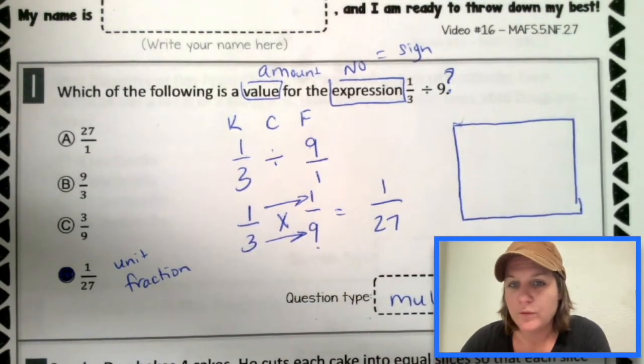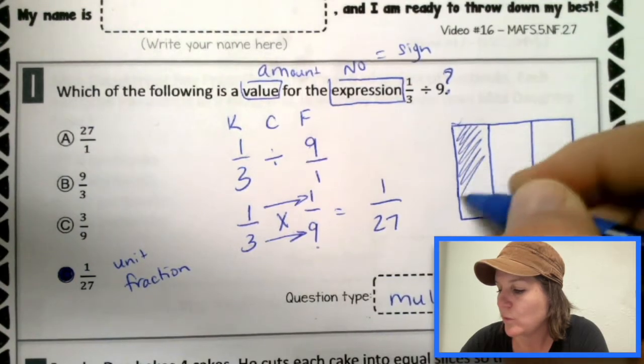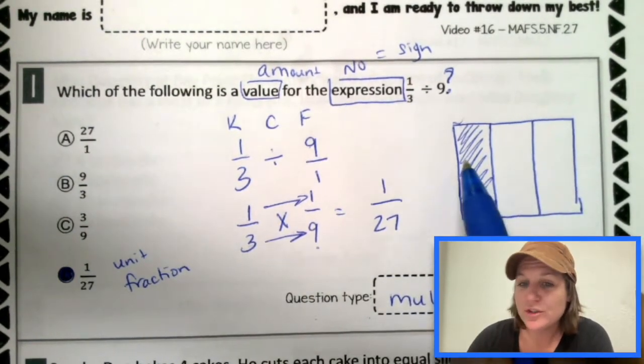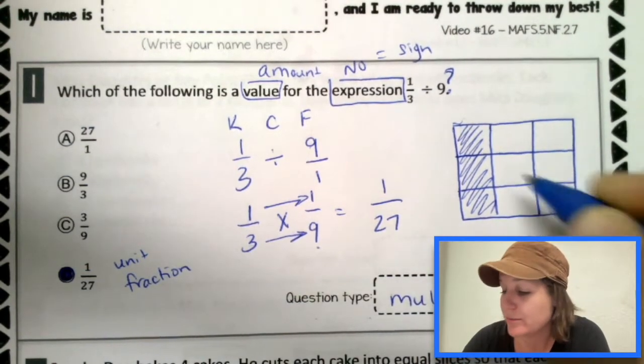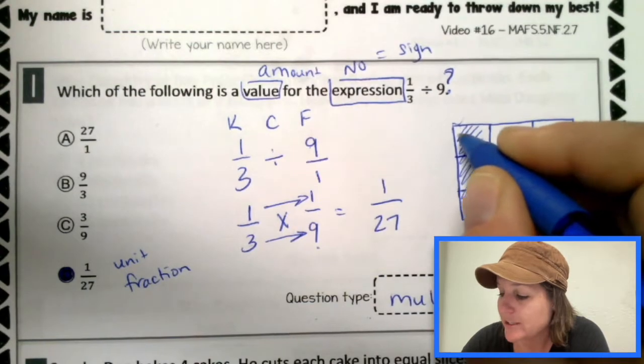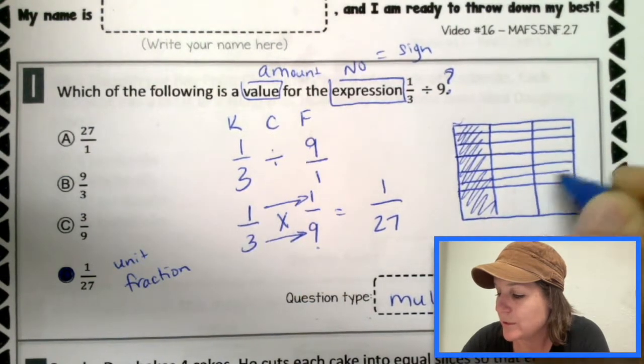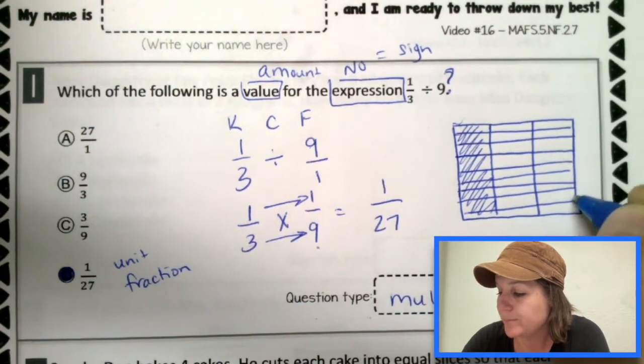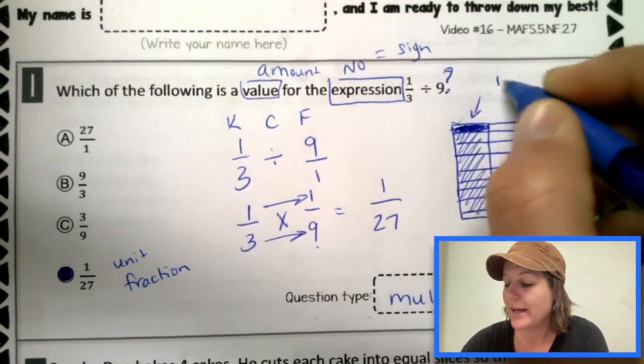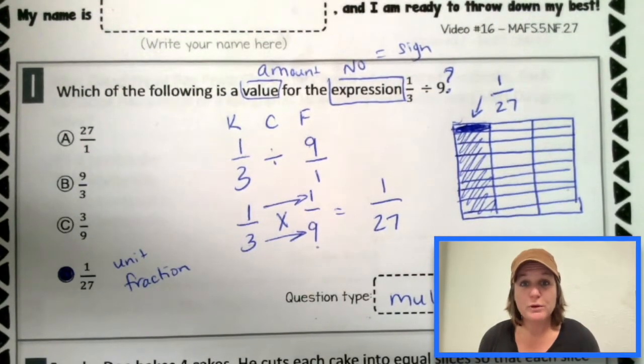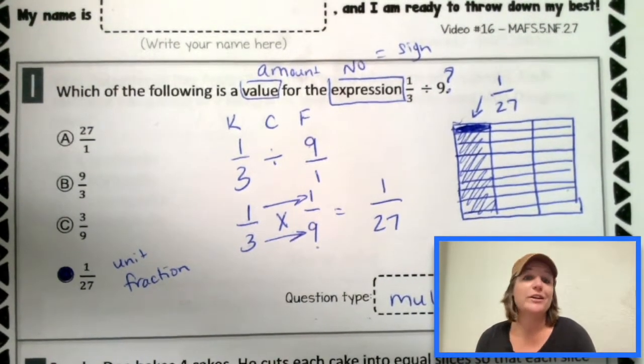The way that we could have drawn this out too, though, would have been like this. If we had something and we said, all right, here's one third. So let me break it into thirds and I'm going to shade in one third. And then we took that one third and divided it by nine. Watch how I do that. I'm actually going to put nine slices. So now if we divided one third by nine, one of those little tiny pieces that we just made would be one out of 27. And that's how you can represent it with a drawing as well. All right. Go ahead and make any corrections that you need to make. Maybe you want to jot down this model and then I want you to join me for number two.